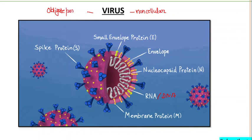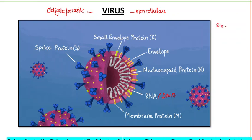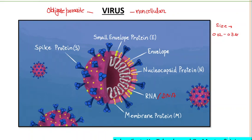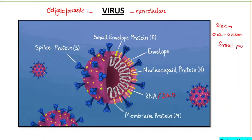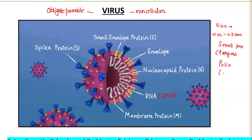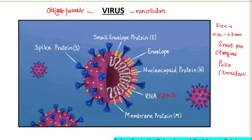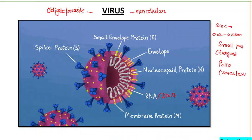The size of a virus varies from 0.02 to 0.3 micrometers. Smallpox, despite its name suggesting small size, is actually the largest known virus, while poliovirus is the smallest known virus. A fully assembled infectious virus is called a virion, and its main function is to deliver its DNA or RNA genome into the host cell.